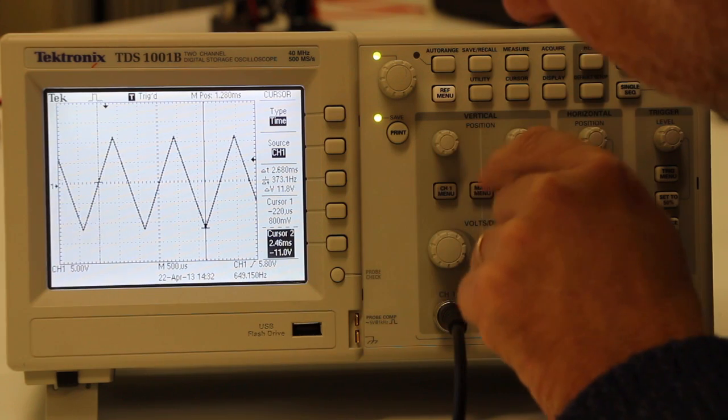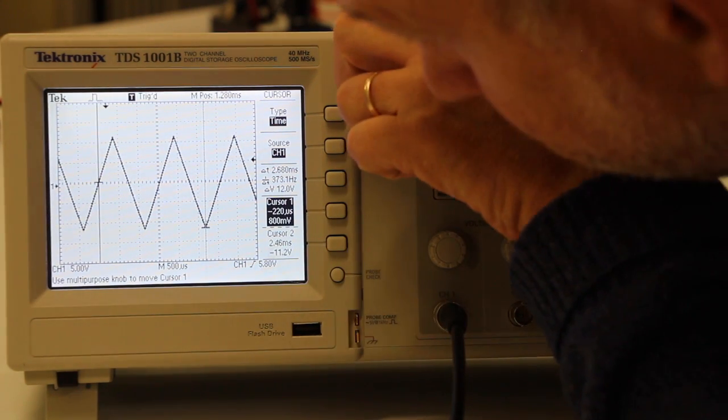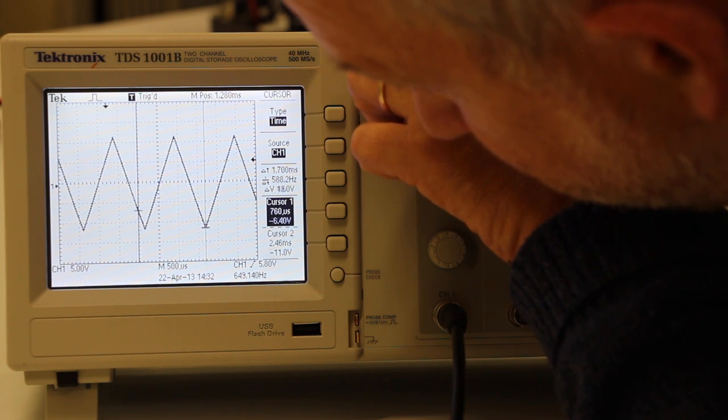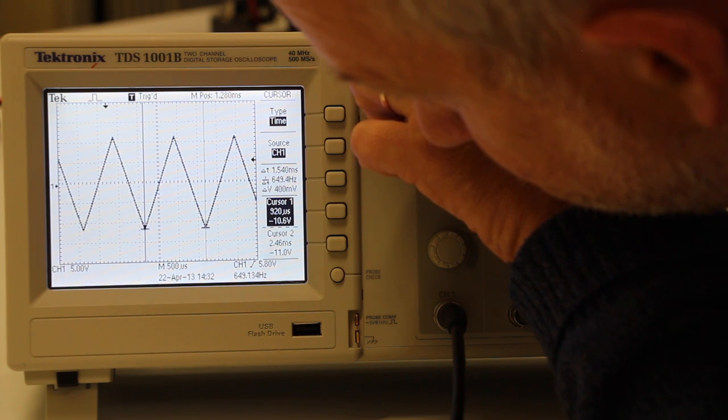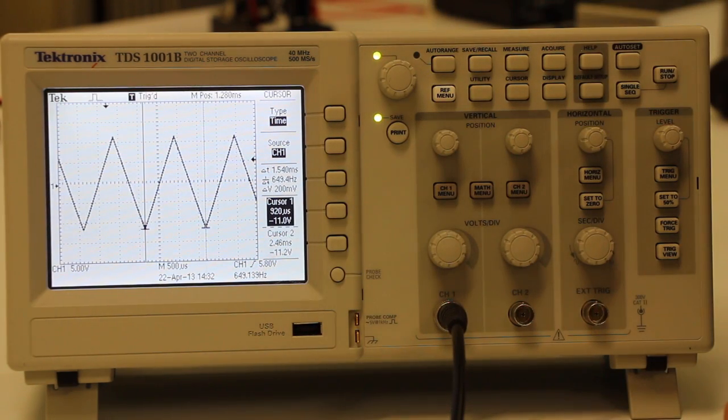And then you can go to cursor one, move that around, and you could, for example, find the period delta T between cursor one and cursor two, and it tells you that in the middle there.